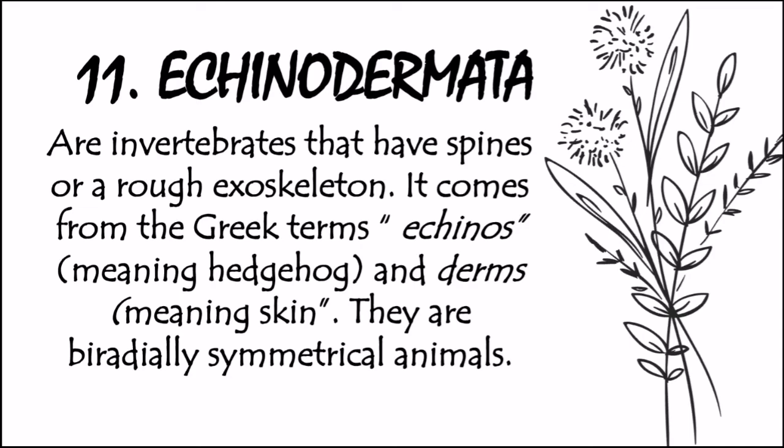For the eleventh phylum, we have Echinodermata, which are invertebrates that have spines or a rough skeleton. It comes from the Greek terms echinos, meaning hedgehog, and derms, meaning skin — so they have spines or spikes on their skin. They are radially symmetrical animals. Radially symmetrical animals are those that have many lines of symmetry that all go through a central point, similar to spokes on a bicycle wheel. Because of its circular arrangement, radially symmetrical animals such as jellyfish and sea urchins have no distinct front and back ends. Examples are sea star and brittle star.